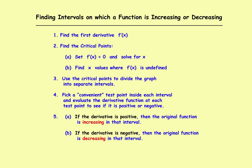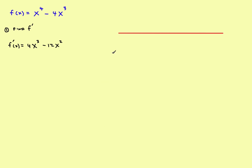Now we'll go back to our rules. To find the critical points, set the first derivative equal to zero and solve for x, or find values where it's undefined. Since it's a polynomial, it will be defined everywhere, so we don't have to worry about undefined values. So we take 4x cubed minus 12x squared and set it equal to zero. To solve this, we factor it — both terms have at least a 4 and at least an x squared, so we factor out 4x squared, leaving x minus 3.